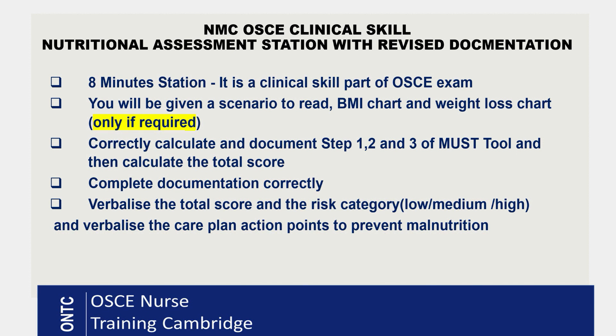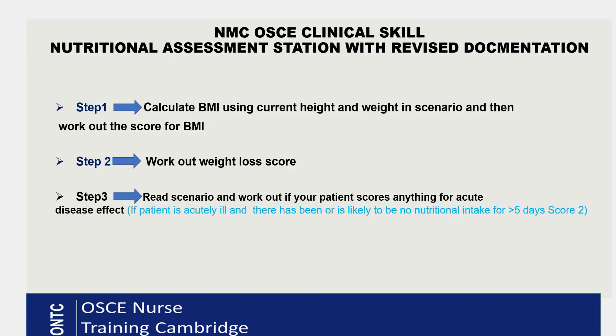How do we do a malnutrition risk assessment? We work out the Malnutrition Universal Screening Tool (MUST). There are three steps. Step 1 is always calculating the body mass index, which depends on the current weight and height — both will be given in the scenario. Step 2 is working out the weight loss score: how much weight your patient has lost in the last three to six months.